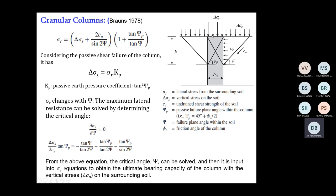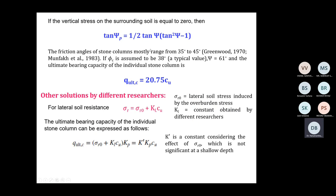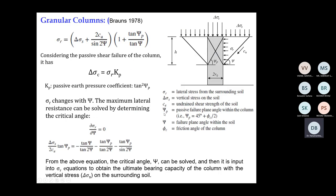The total load to be borne by the stone column is σr × Kp. Based on extensive experimental investigations, it is found that the ultimate bearing capacity of the column is approximately 20.75 times the undrained shear strength of the soil. Other solutions by different researchers give lateral soil resistance as σr = σr₀ + k1 × cu. The difference from Brown's equation is that σr is now a function of overburden stress (σr₀) and undrained strength cu, where k1 is a constant obtained by different researchers.